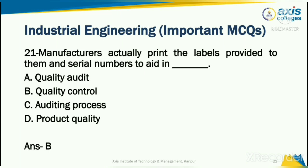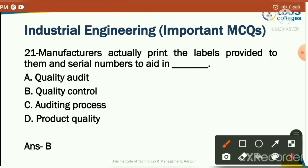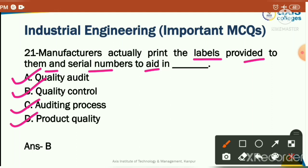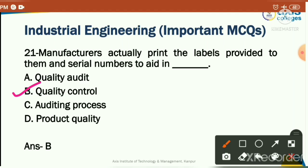Manufacturers actually print the labels provided to them and serial numbers to add — this is related to quality control of the product. The correct answer is quality control audit process, as it represents the quality control of the product.